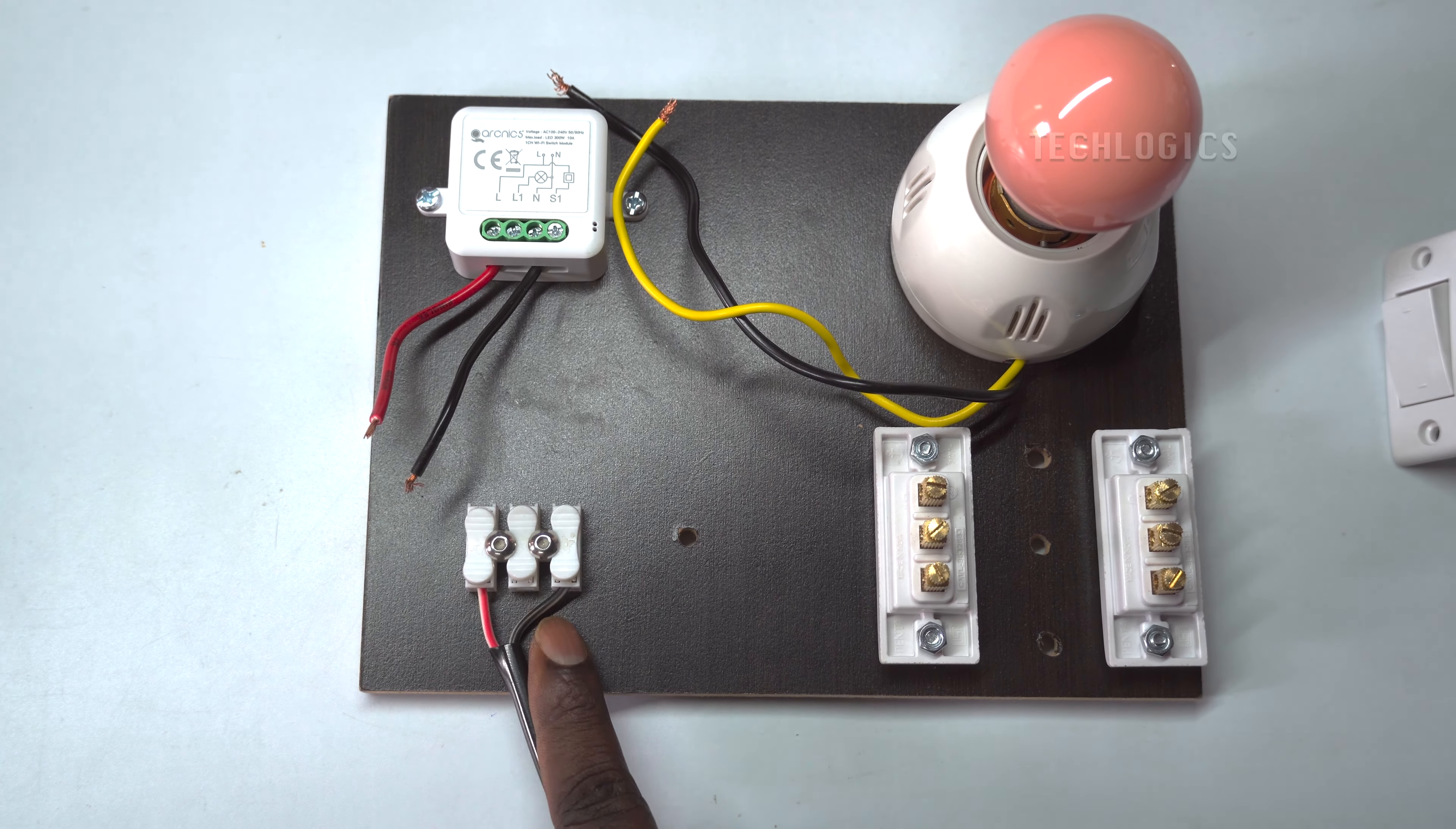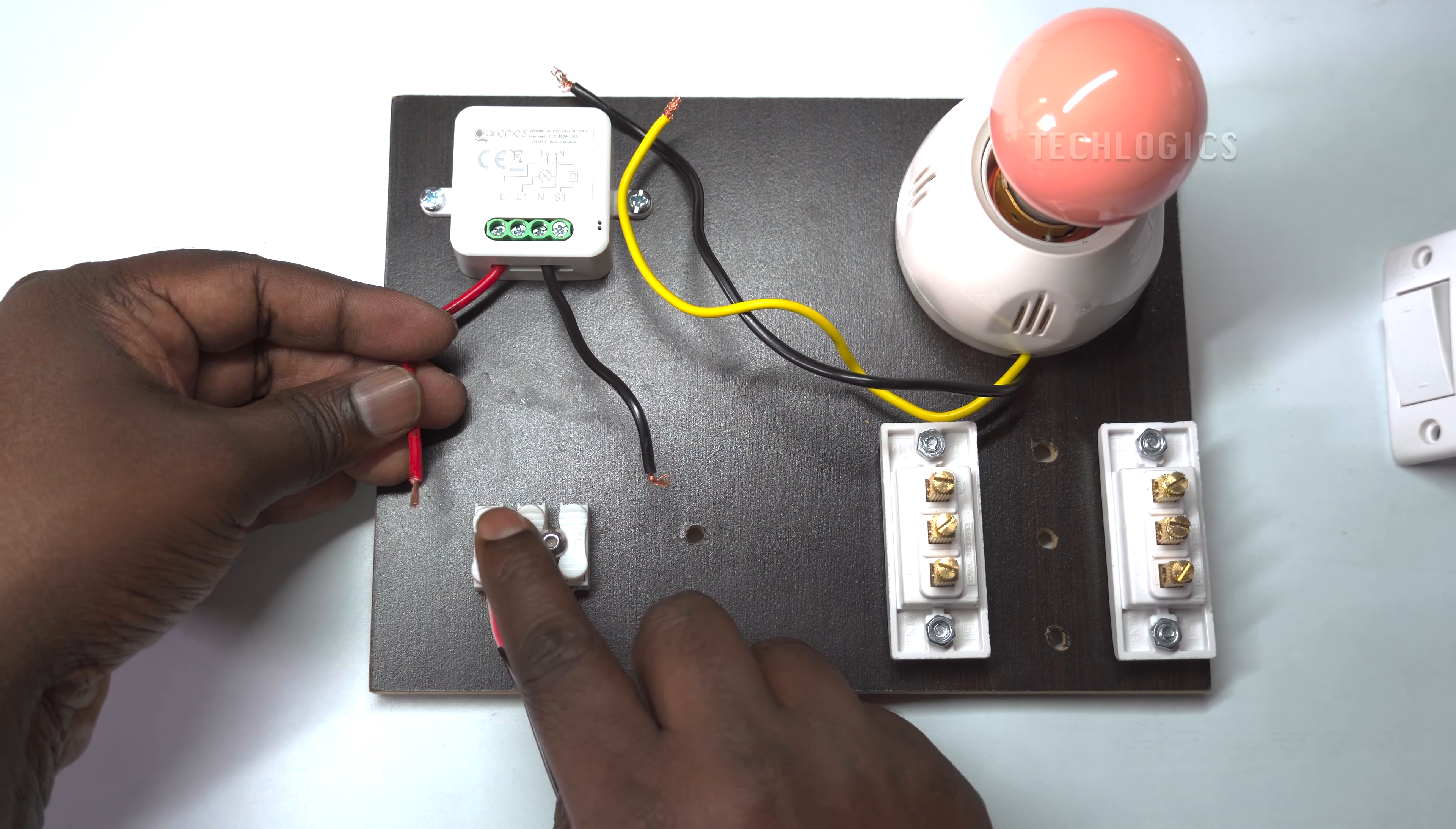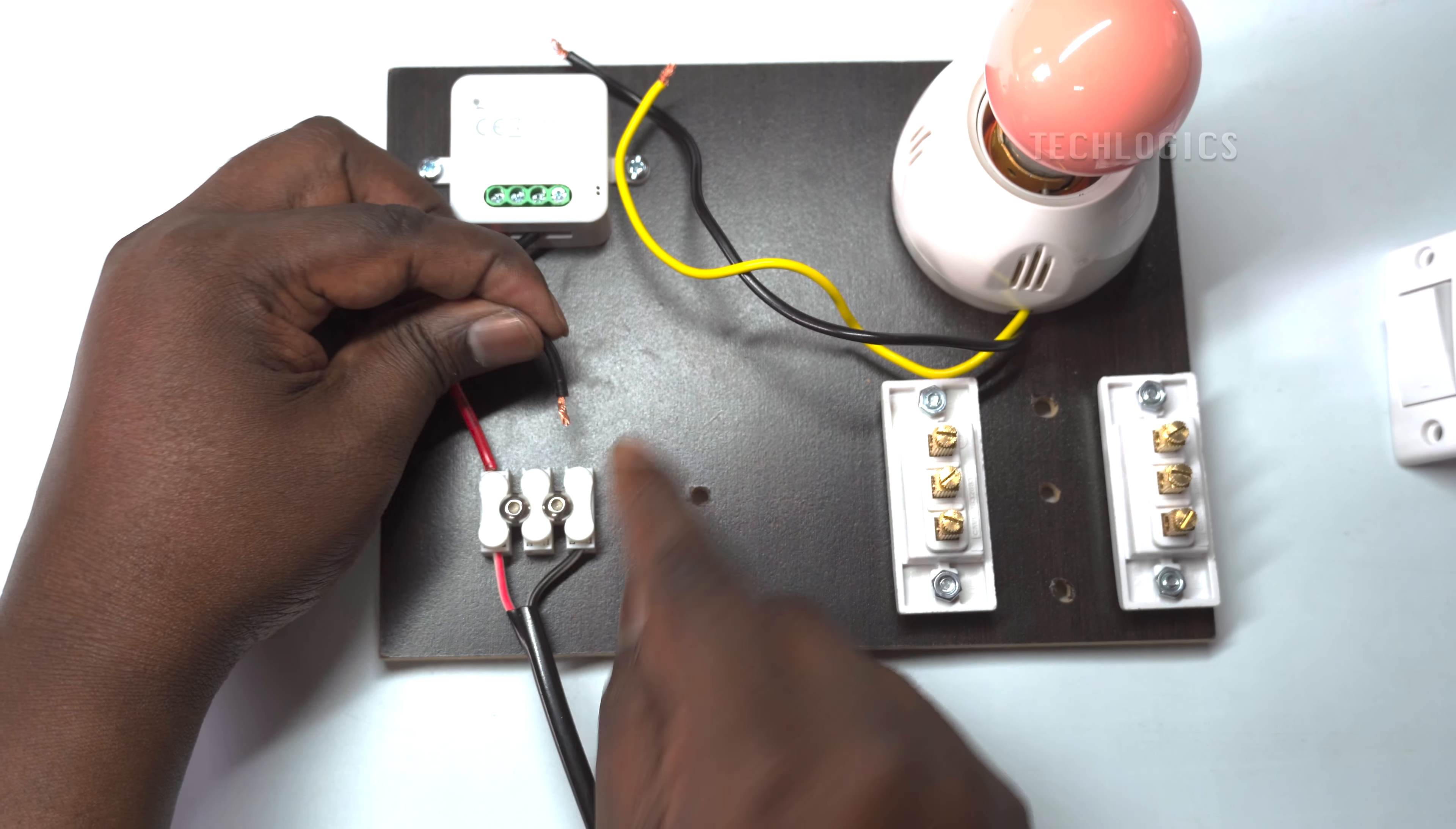First, connect the live wire to the L terminal on the 2 Yaw switch. Then, connect the neutral wire to the N terminal on the 2 Yaw switch.